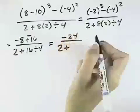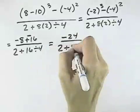In our denominator, we have 2 plus, but we do have division left, so we have 16 divided by 4 is 4.